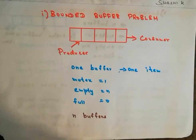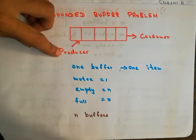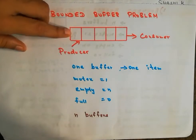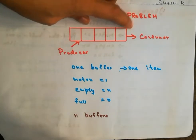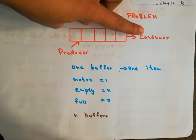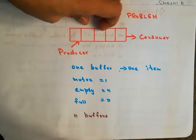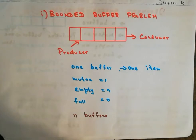For the producer to place items, there has to be a space — at least one buffer has to be empty so the producer can place the item. For the consumer to consume items, there should be at least one buffer which is full. So the producer checks for an empty buffer and the consumer checks for a full buffer.